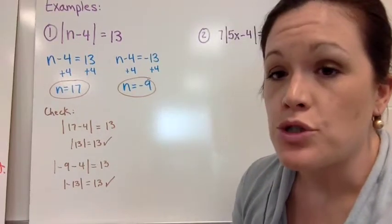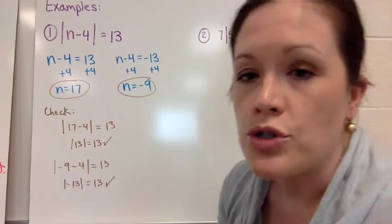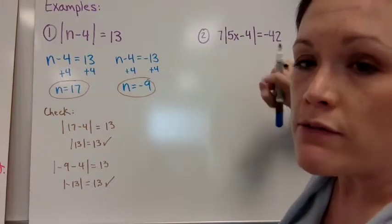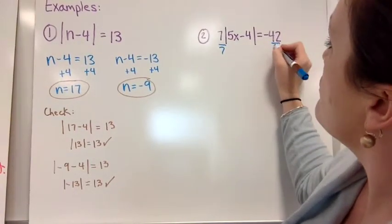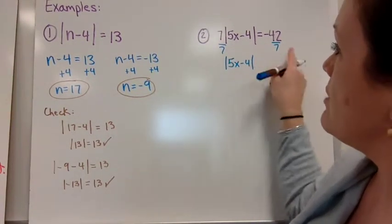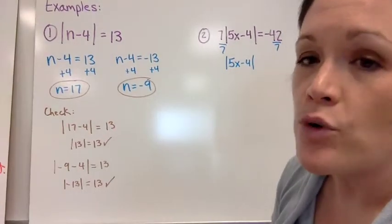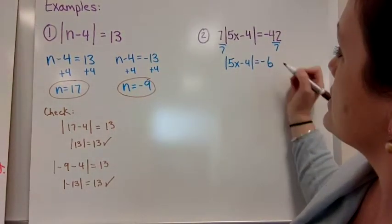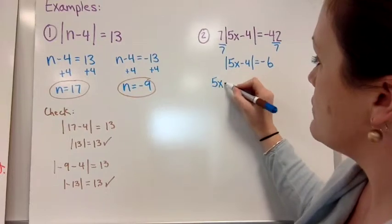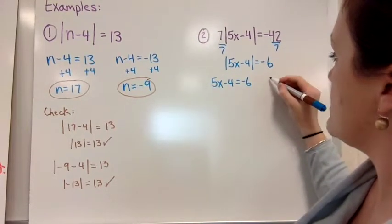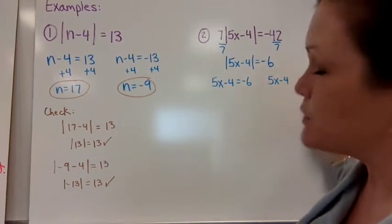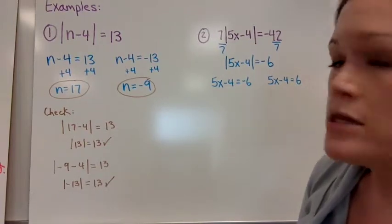Example two has a little bit more to it. We have a seven out front of the absolute value symbol, so we divide by seven first to get the absolute value by itself. Once we divide by seven, we get the absolute value of five x minus four equals negative six. So then we set up our two equations: five x minus four equals negative six, and five x minus four equals positive six.